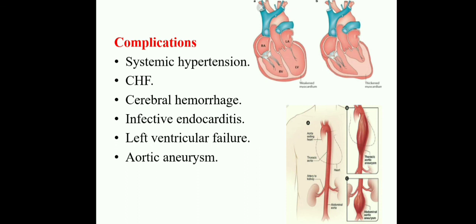To summarize: coarctation of aorta is a narrowing of the distal part of the aorta. Clinical features include increased blood pressure in the upper extremities and decreased blood pressure in the lower extremities. Decreased pressure in the lower extremities means the child has absent or weak femoral pulse and cold, clammy skin over the lower extremities. Increased blood pressure in the upper extremities means the child has nasal bleeding, headache, and hypertension. Surgical interventions include balloon angioplasty, end-to-end anastomosis — removing the narrowed part and doing anastomosis — this is called end-to-end anastomosis.